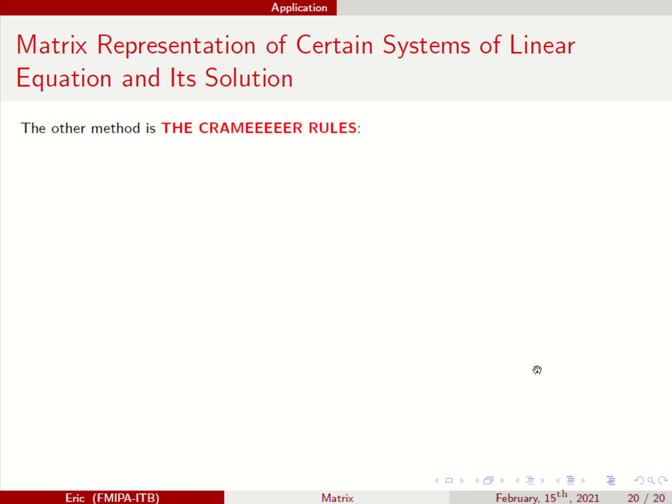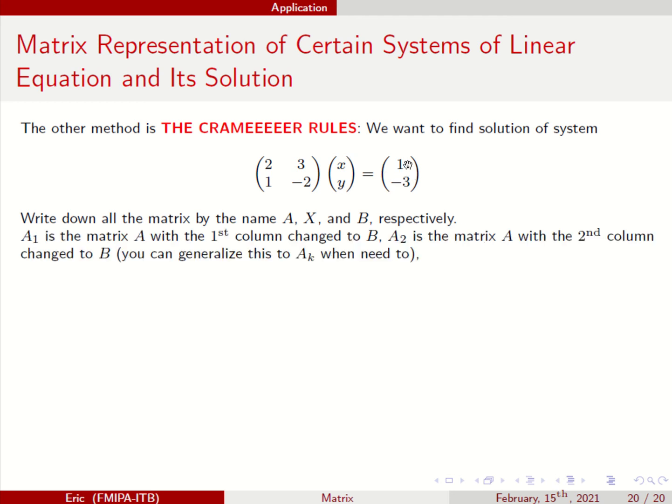This is the Cramer rules, the last method. We want to find the solution of this system, the same system of linear equations that have 2 variables and 2 equations and only have 1 solution. So write down all the matrices by the name A, X, and B. A is the first one, X is the X, Y, and B is the constant.